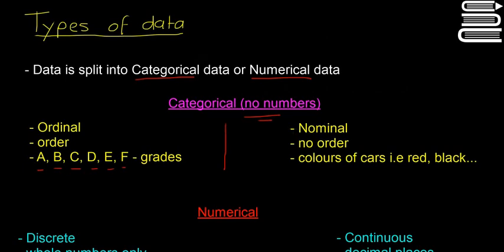Also then, nominal data is another type of categorical data. So nominal data doesn't have an order, so it's when you're, say, counting cars on a road, the different colours of cars would be nominal data, so red, black, blue, etc.